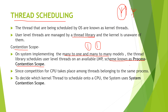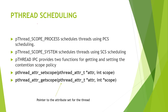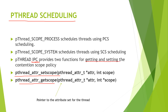For system-wide threads, we use system contention scope (SCS). This is the overview of thread scheduling. There are functions used for pthread scheduling — the main thread attributes are pthread_attr_setscope and pthread_attr_getscope. There is also an implementation via inter-process communication for getting and setting the contention scope policy, discussed as pthread IPC.